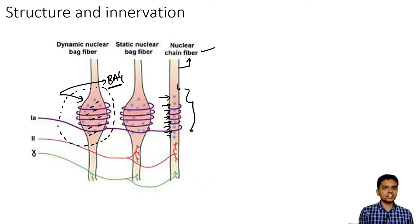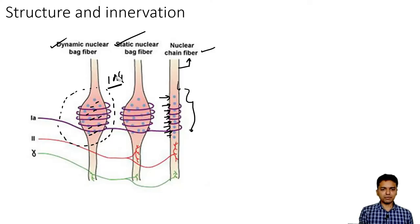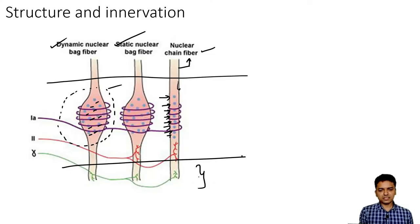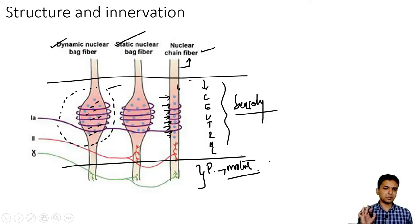The nuclear bag fiber is further subdivided into two types depending upon the function: one is called as a dynamic nuclear bag fiber and another one is called as a static nuclear bag fiber. So in totality there are three types of intrafusal fibers: dynamic nuclear bag fiber, static nuclear bag fiber, and the nuclear chain fiber. This entire intrafusal fiber can be divided into two portions — the central portion and the peripheral portion. The central portion is the actual sensory part, whereas the peripheral portion is the motor part.